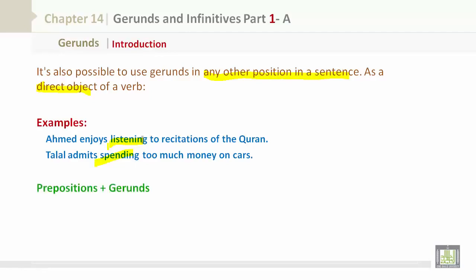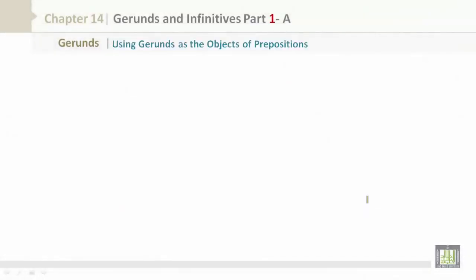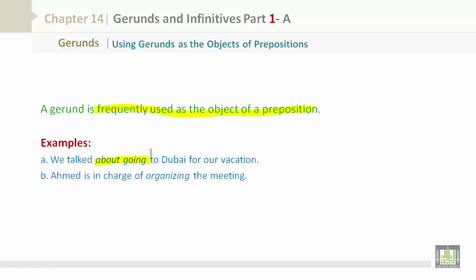Prepositions plus gerunds. Gerunds are also objects of prepositions. This means that whenever a verb follows a preposition, use the gerund or -ing form of the verb. A gerund is frequently used as the object of a preposition. Examples: 'We talked about going to Dubai for our vacation.' 'Ahmed is in charge of organizing the meeting.'